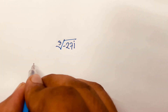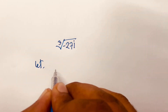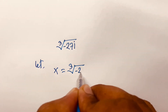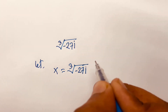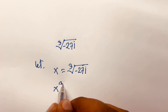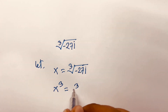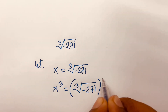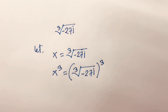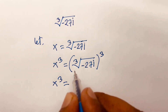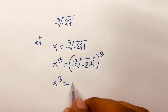To solve cube root of minus 27i, first let x equal the cube root of minus 27i. Then cube both sides, so x cubed equals the cube root of minus 27i to the power 3. The cube and cube root cancel, giving x cubed equals minus 27i.